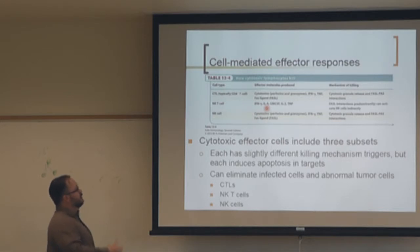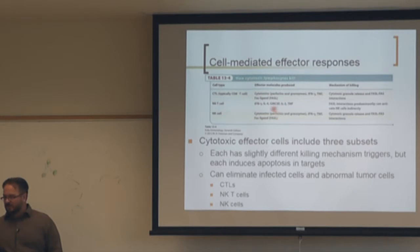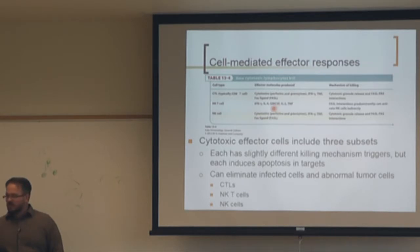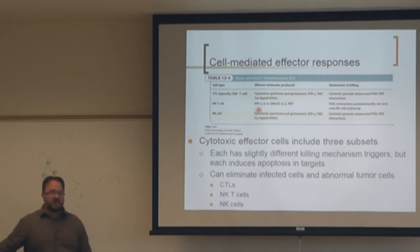NKT cells also produce GM-CSF, IL-2, and TNF, creating an inflammatory environment and recruiting dendritic cells. They can also kill through FAS/FAS ligand. Interferon gamma secreted by these cells can have a direct antiviral effect.